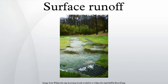Surface runoff can be generated either by rainfall, snowfall, or by the melting of snow or glaciers. Snow and glacier melt occur only in areas cold enough for these to form permanently. Typically snowmelt will peak in the spring and glacier melt in the summer, leading to pronounced flow maxima in rivers affected by them. The determining factor of the rate of melting of snow or glaciers is both air temperature and the duration of sunlight.